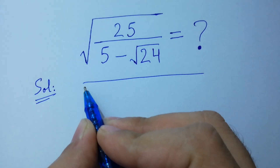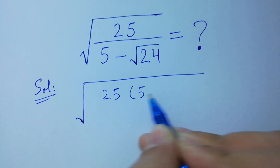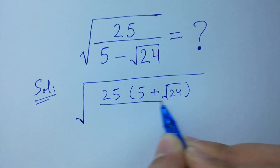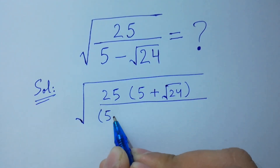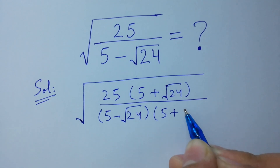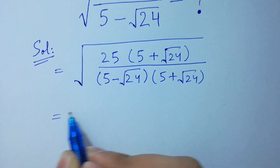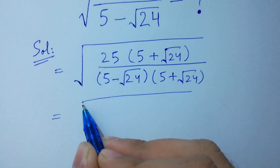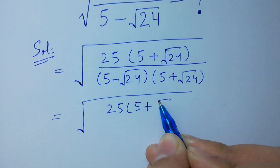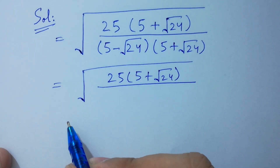We rationalize it — multiply by (5 plus square root of 24) over (5 minus square root of 24) times (5 plus square root of 24). So we have square root of 25 times (5 plus square root of 24) over the denominator.